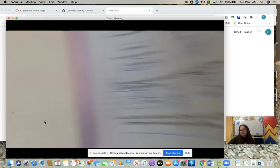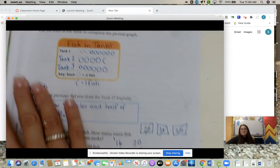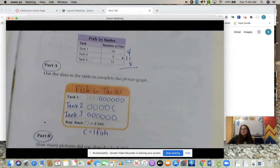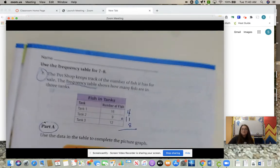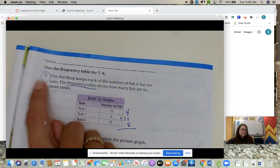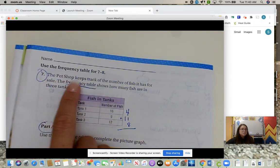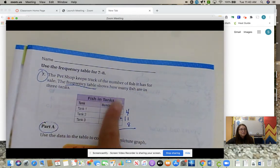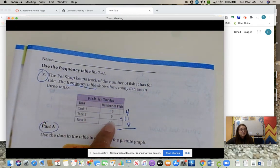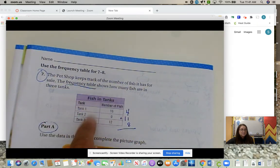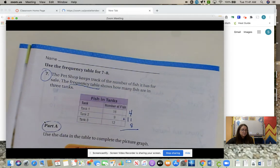Don't worry about number six. Page 95. Use the frequency table for questions seven and eight. The pet shop keeps track of the number of fish it has for sale. The frequency table, this is our frequency table because we have numbers, shows how many fish are in three tanks. Tank one, tank two, tank three. All the fish in the tank.